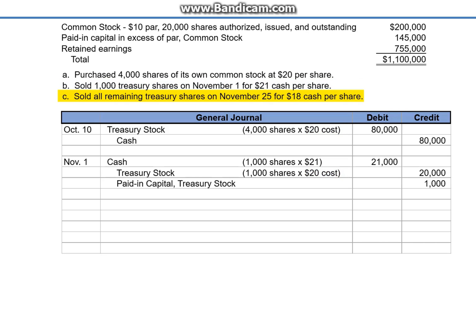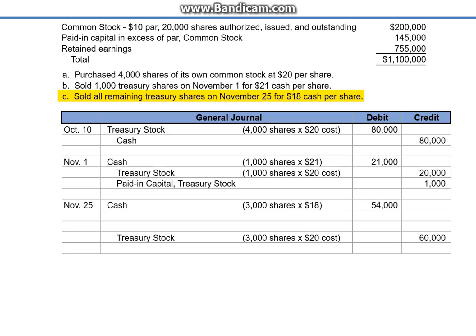Letter C: Sold all remaining Treasury shares on November 25th for $18 cash per share. Debit cash for the amount received — 3,000 shares at $18 per share equals $54,000. Credit the Treasury stock account for the cost of the 3,000 shares at $20 per share — $60,000 — and now we have a $6,000 difference to absorb.